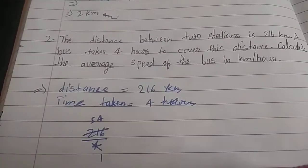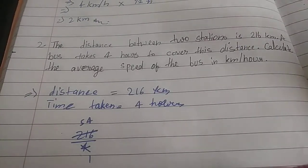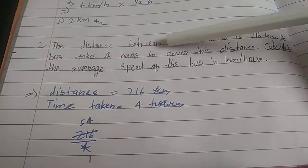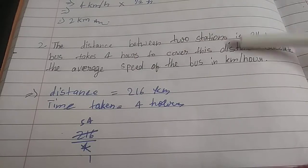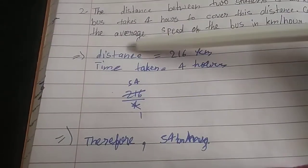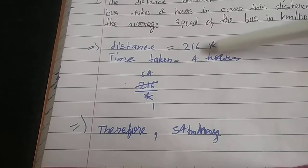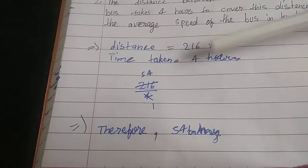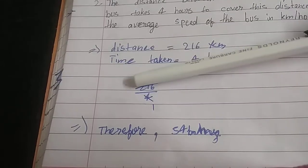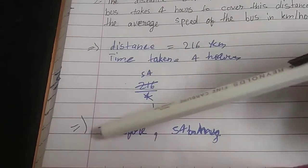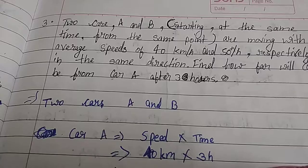Second question: The distance between two stations is 216 kilometers. A bus takes 4 hours to cover this distance. Calculate the average speed of the bus in kilometers per hour. Answer: Distance equals 216 kilometers, time taken equals 4 hours. So we do 216 upon 4, when we cut it we get 54. Therefore, 54 kilometers per hour is our answer.